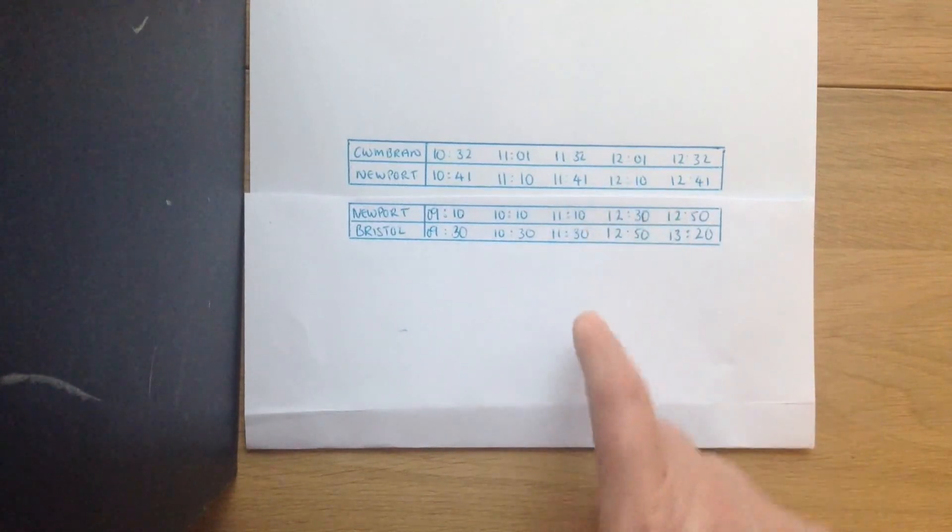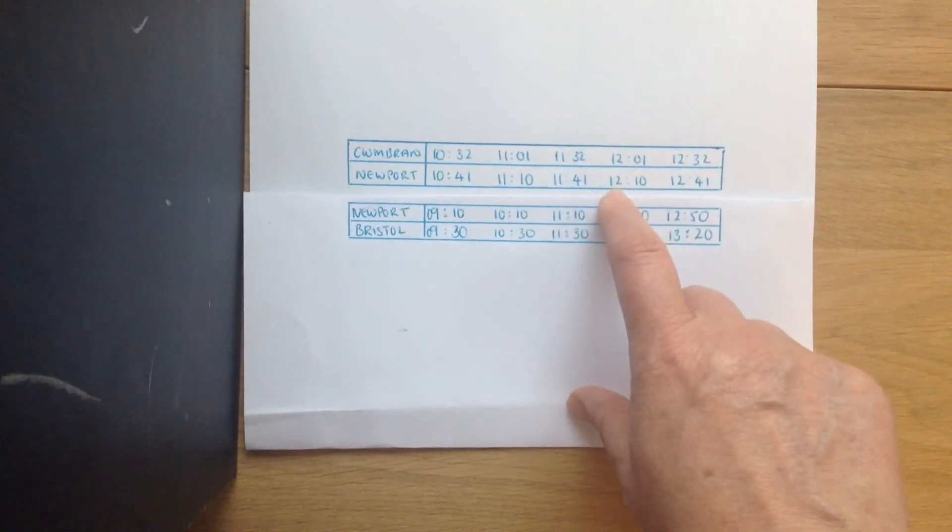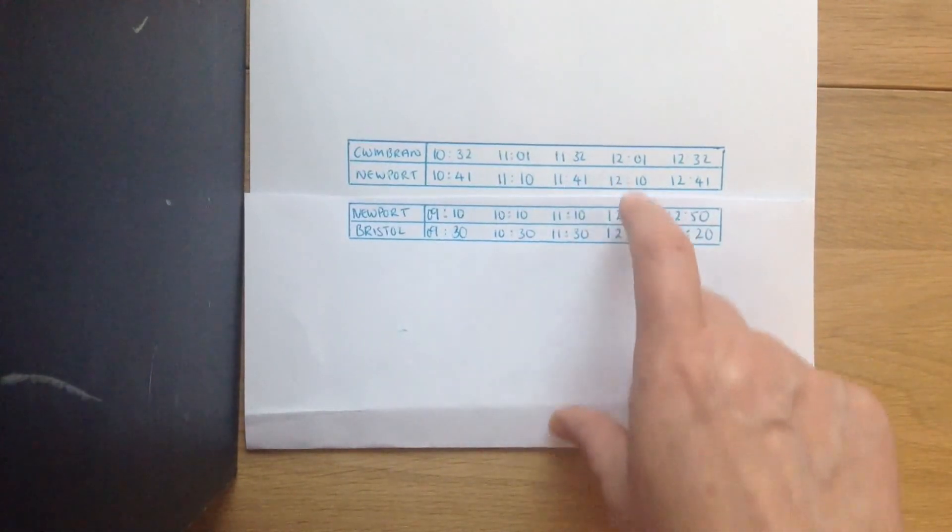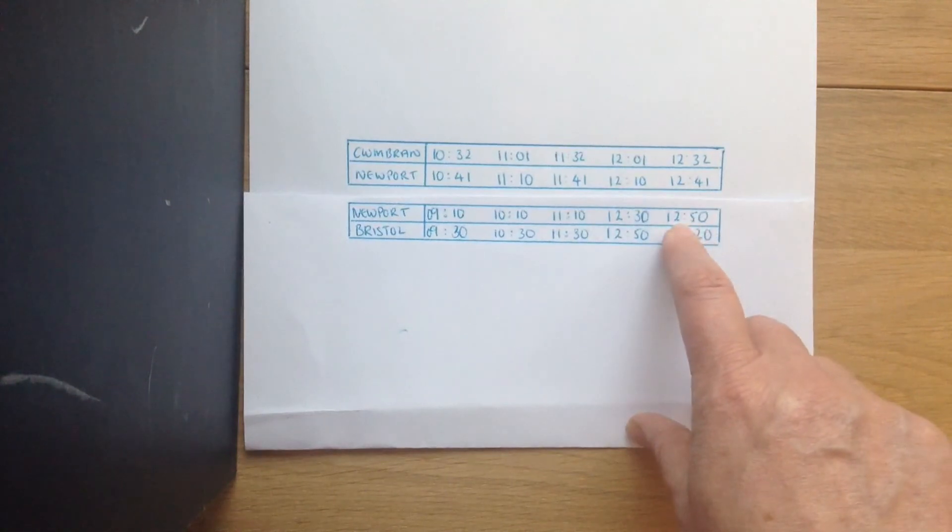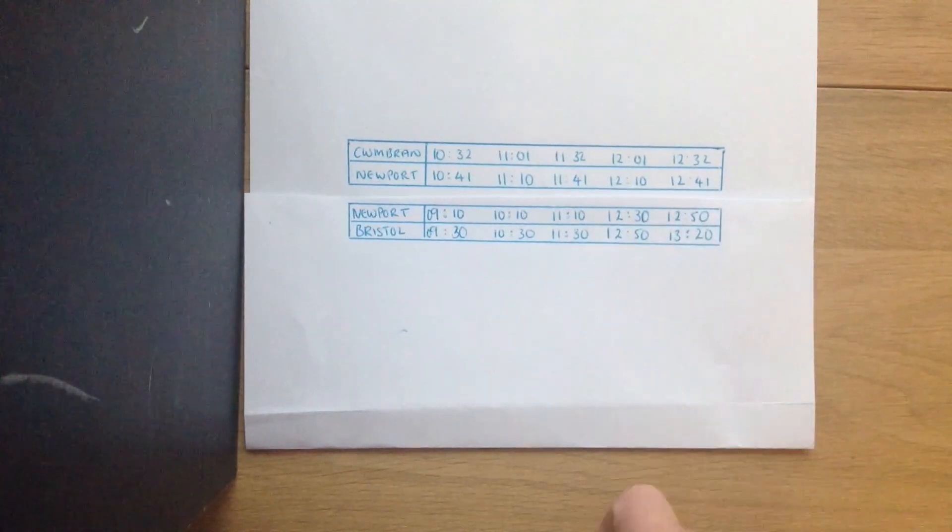But in actual fact, if you're on the 1201 from Cumberland, you arrive in Newport at 1210, so that's when you're at the station. Therefore you could catch the 1230, or if you wanted to, you could hang around and catch the 1250. So these two timetables are independent.